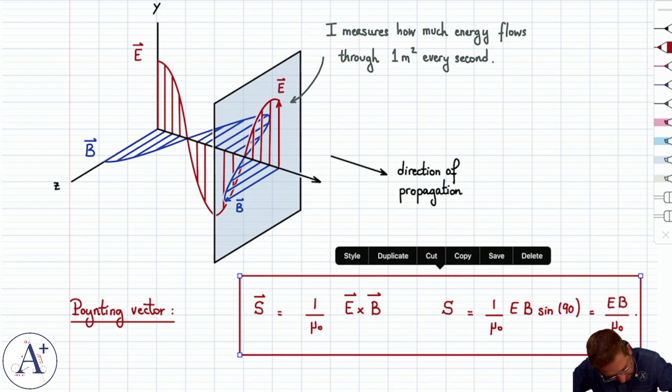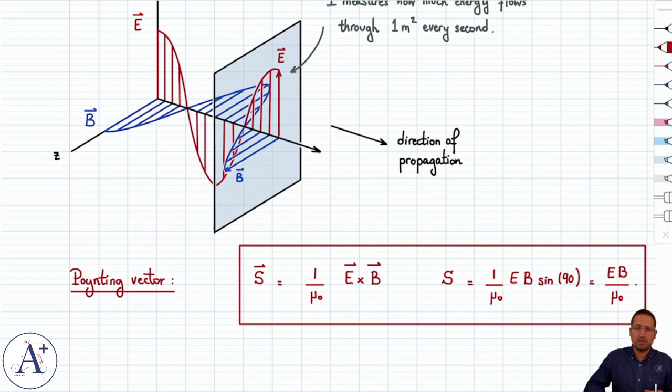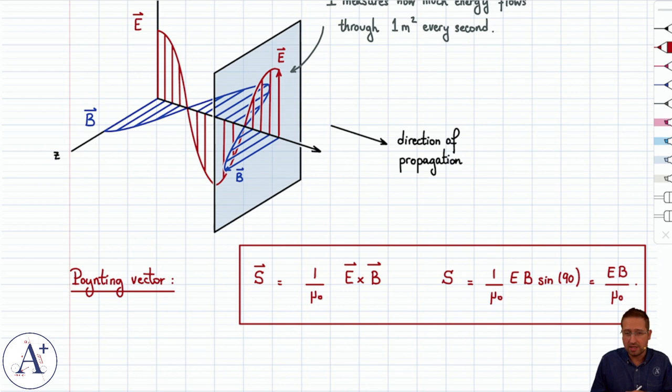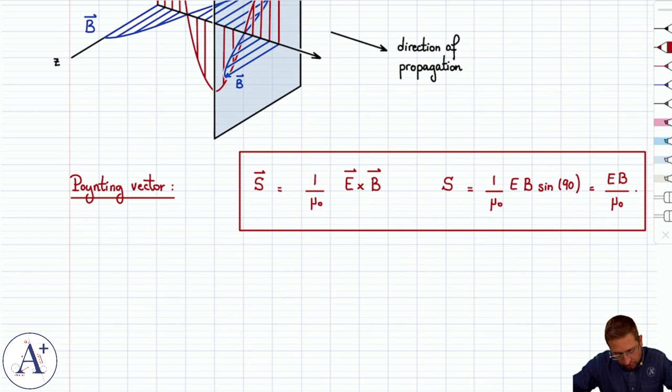This is an extremely clever vector because it points in the direction of propagation, the direction in which sunlight propagates as it's going through your window, and it has a magnitude equal to the intensity. So we achieve two things with one single vector. There's only one problem, which is that E and B oscillate all the time in the case of an EM wave. And so S is the instantaneous intensity, but that's not a very useful quantity. We'd like to know, on average, how much energy comes through the window every second from the sunlight.